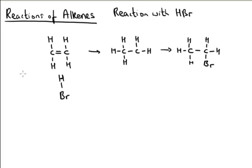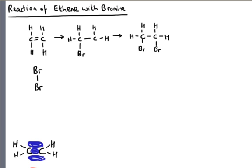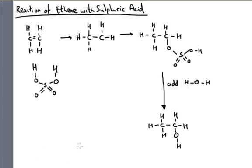Hi there. Now I'm going to talk to you about how the alkenes react and I'm going to show you three reactions: a reaction of ethene with HBr, hydrogen bromide, a reaction of ethene with bromine, and a reaction of ethene with sulphuric acid.